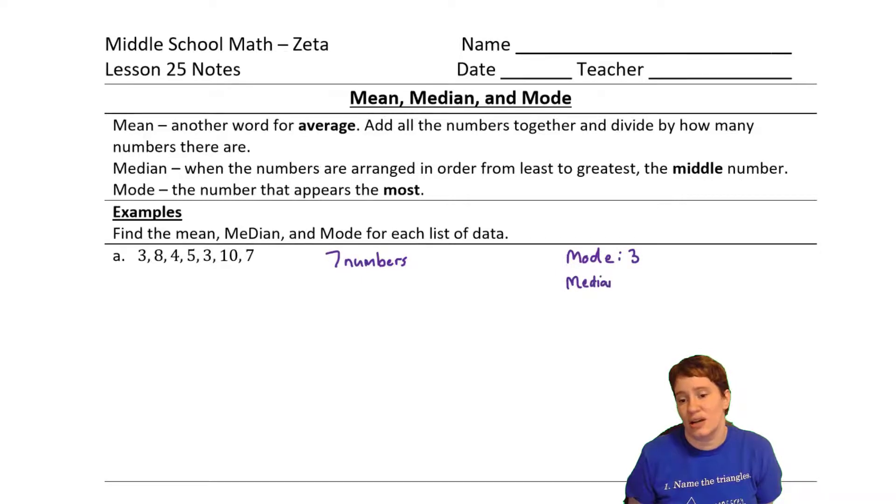The next easiest thing to find is going to be the median. Because in order to find the median, we do need to do a little work, we need to arrange these in order from least to greatest. One of the ways that we can make sure that we do this right is to mark out the numbers as we use them. Because then at the end, whatever's not marked out, we can fit in where it's supposed to go. So then four, five, seven, eight, and 10.